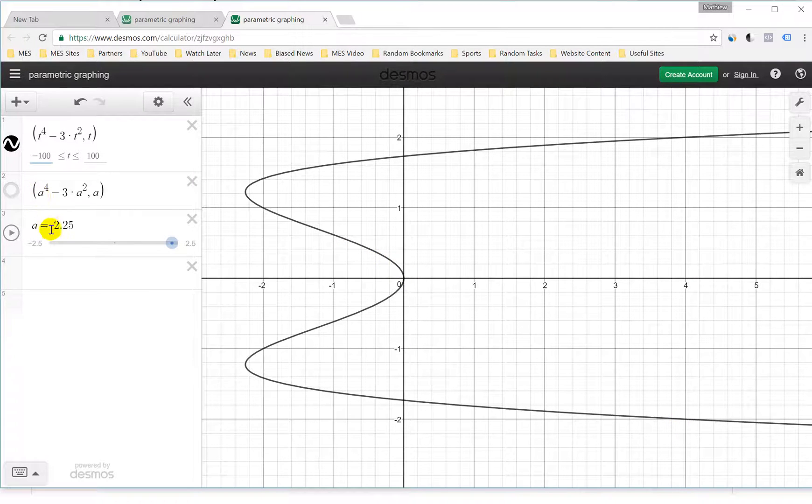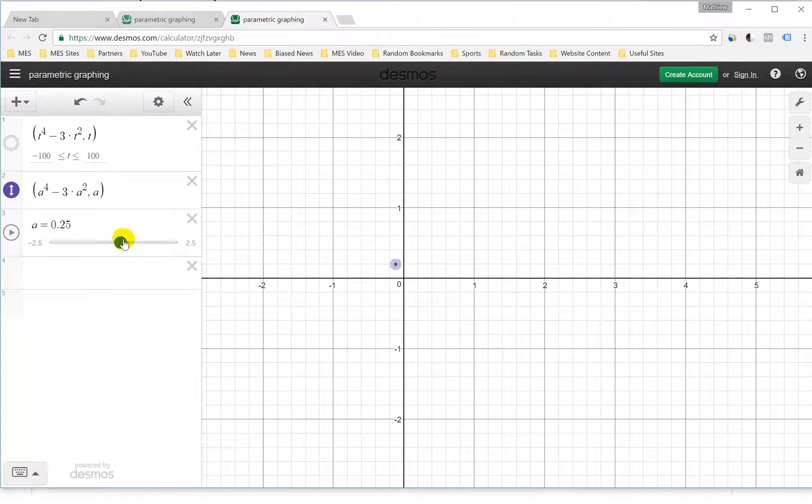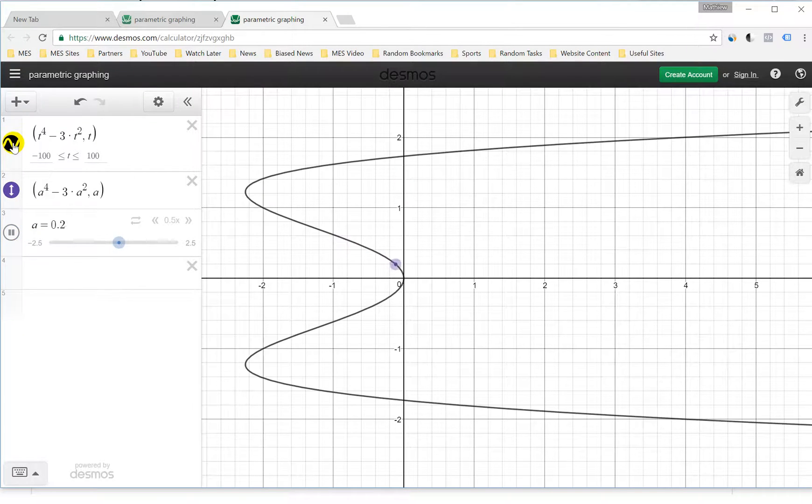With this Desmos calculator, you could write this exact same equation but now write a. The reason is you can hide this curve or show, and then you can show this point here. You can set a equal to any number and have different values of it. As you can see, this is graphing the point with the same equation a to power 4 minus 3a squared comma a. You can also press the play button and show it going back and forth. You can change these values to whatever you want. As you can see how it follows along, this is actually quite amazing.